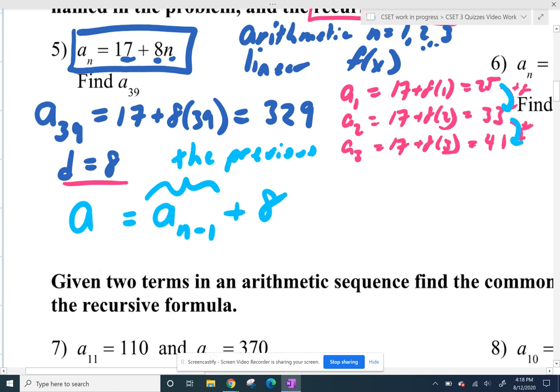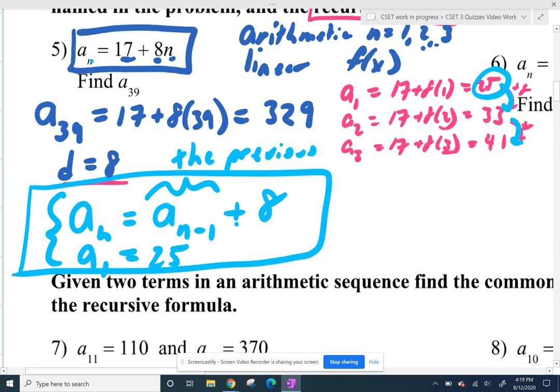So that's always going to be the template for arithmetic recursive series. You're going to have this a sub n minus 1 and then plus or minus whatever your common difference is. And then recursive formulas always have two pieces because you have to tell them where to start. So you just say, start with your first term, your first term was 25. When you plug in 1, you get 25. And so those two ideas put together make up a recursive formula that describes the series.